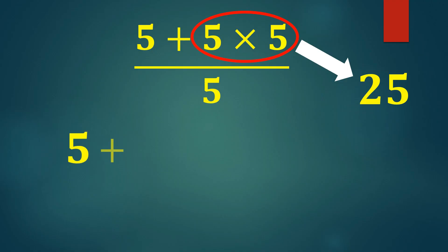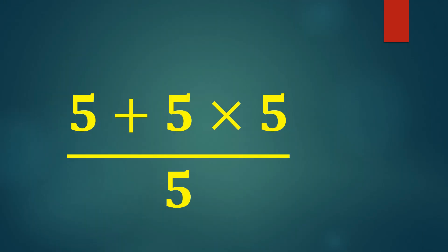Now we have 5 plus 25, which equals 30. And finally, 30 divided by 5 equals 6. So, the correct answer to this problem is 6.